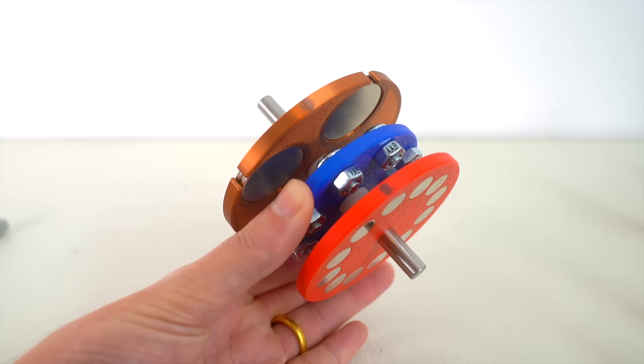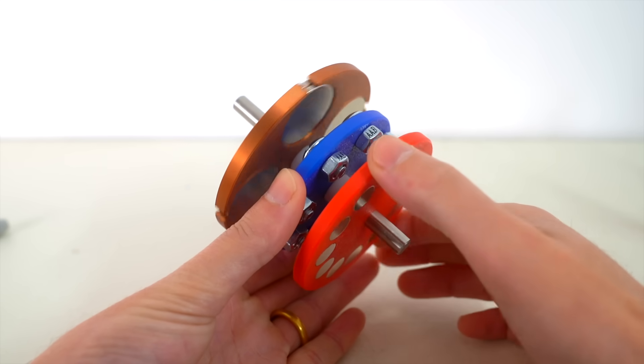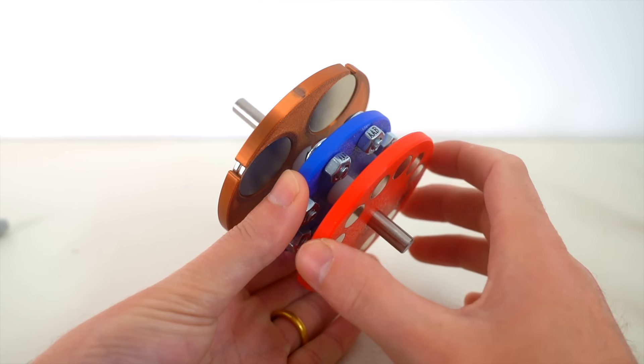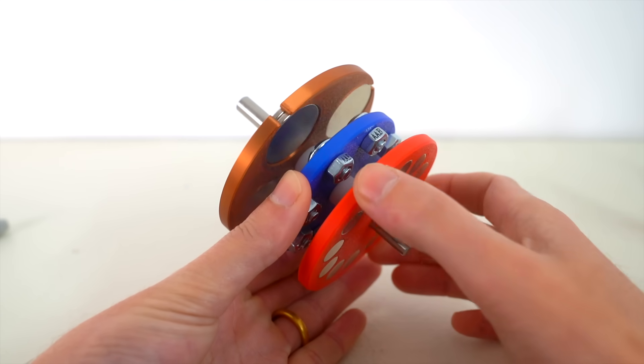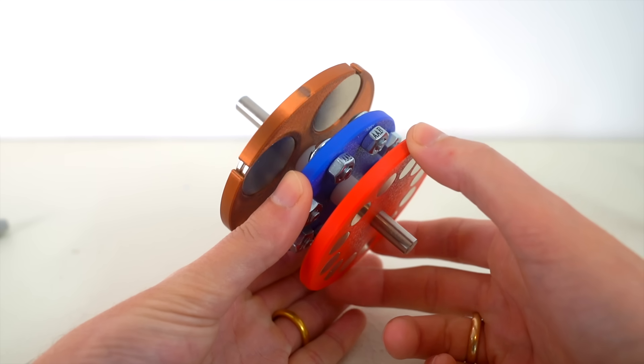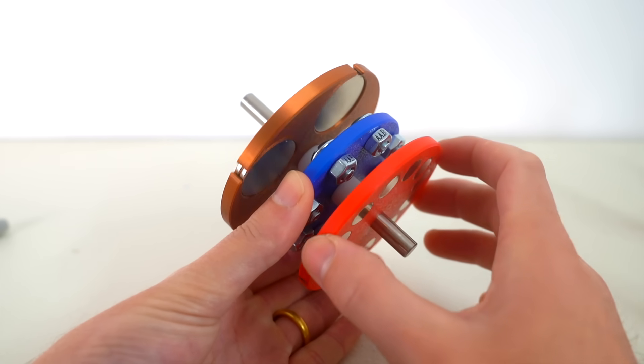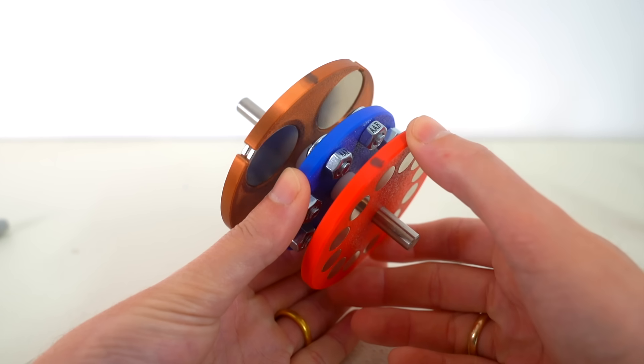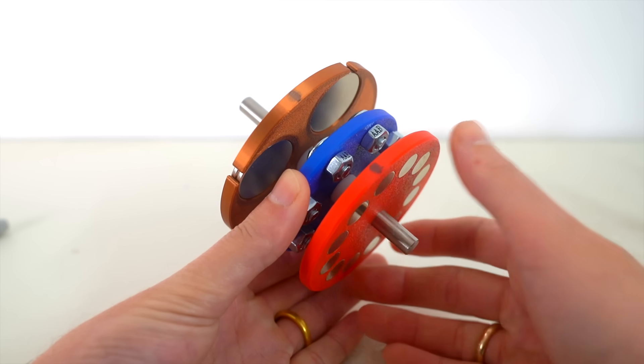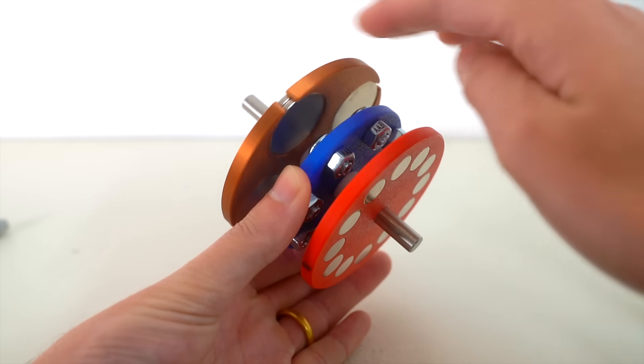And we could even do it in reverse. So if I spin this one one time, the copper gear will spin three times. That's one, that's two. If I keep going, they should line up here. And there we go, we have a full rotation on the red gear and three rotations on the copper gear.